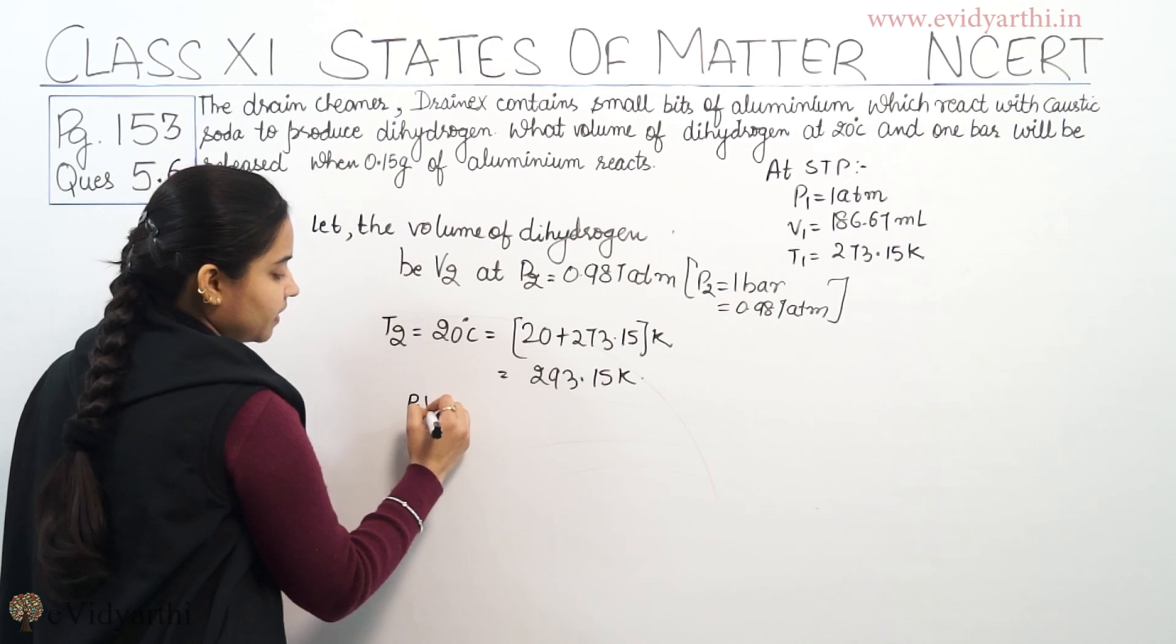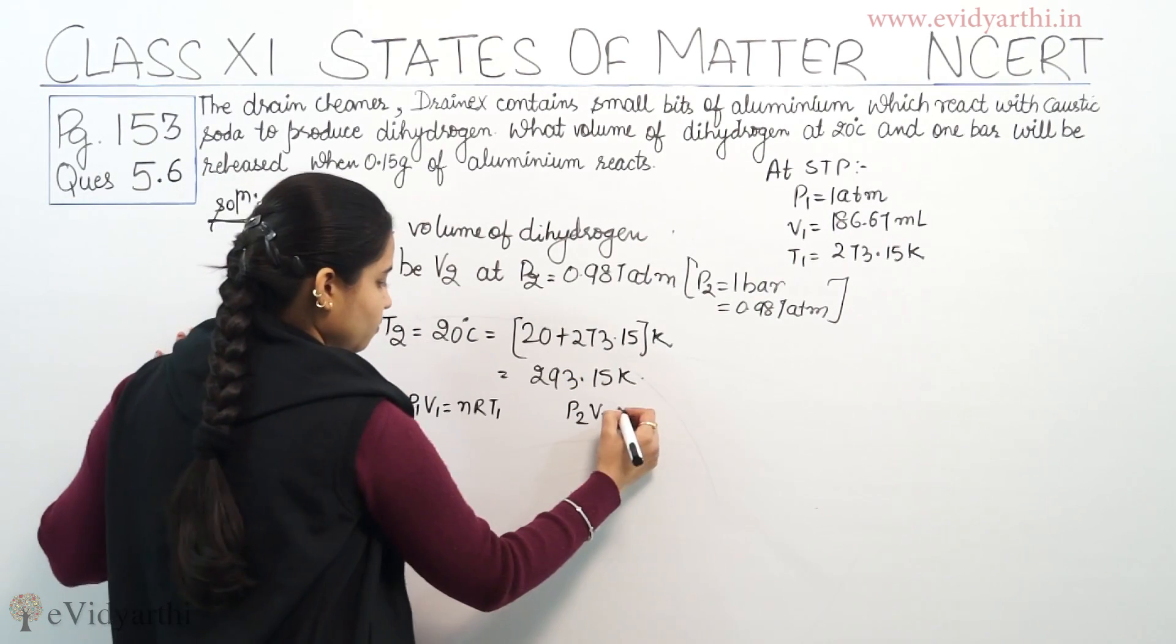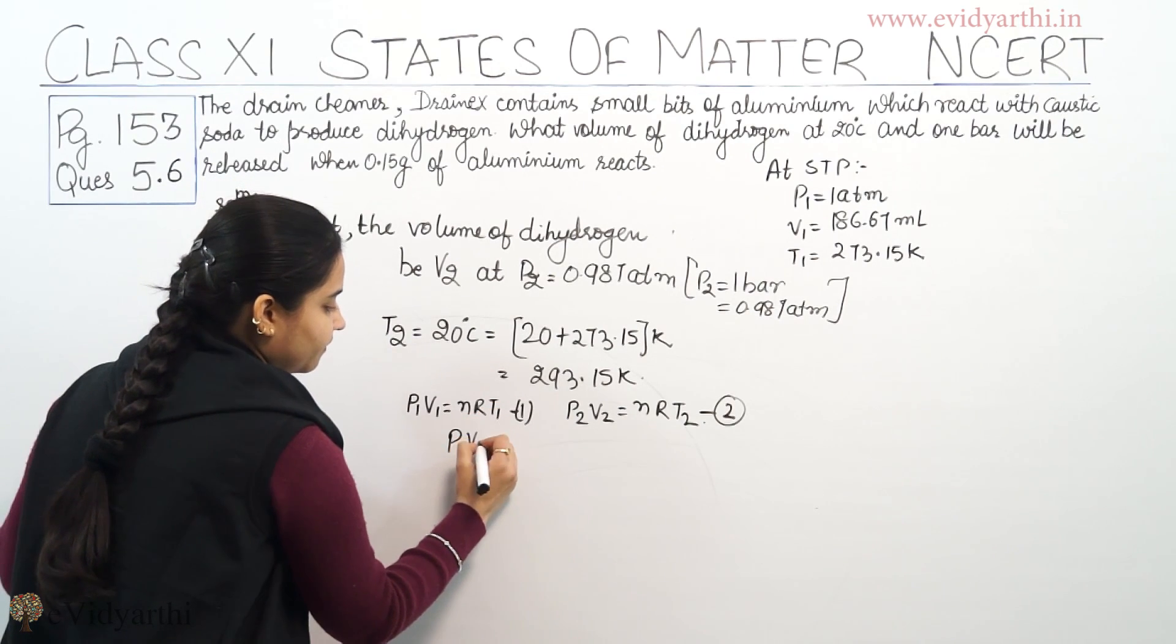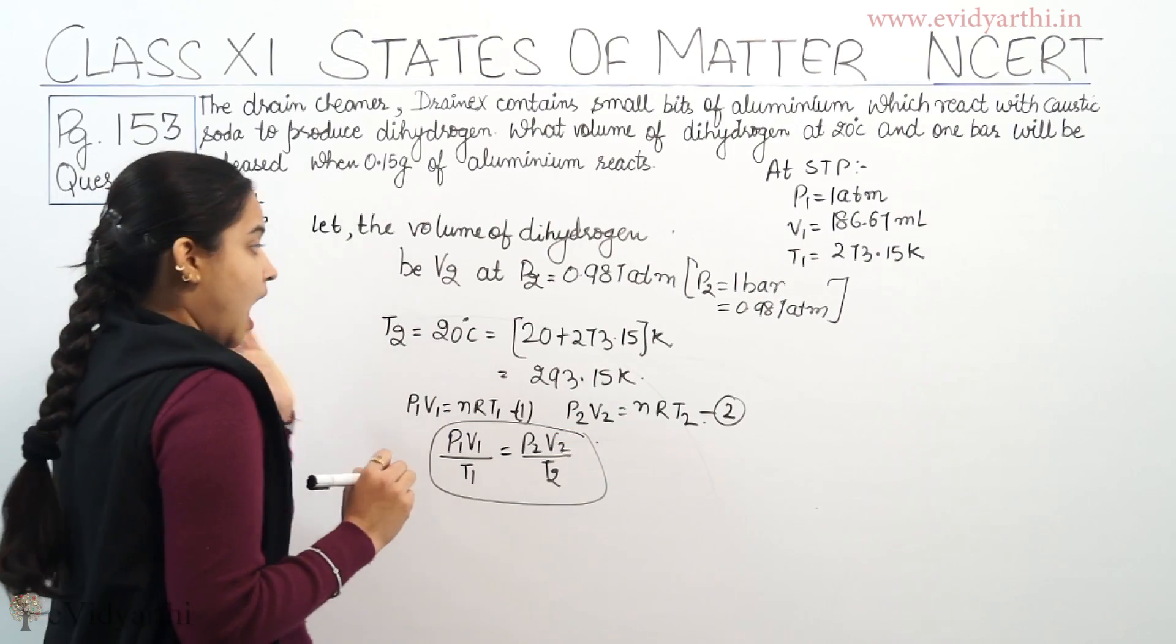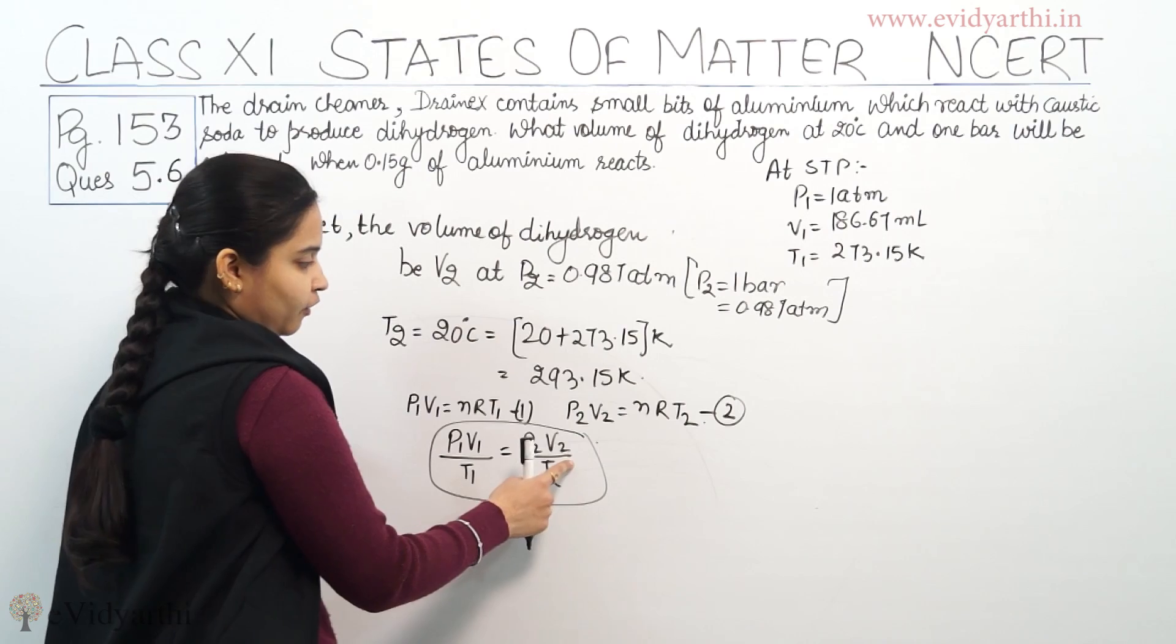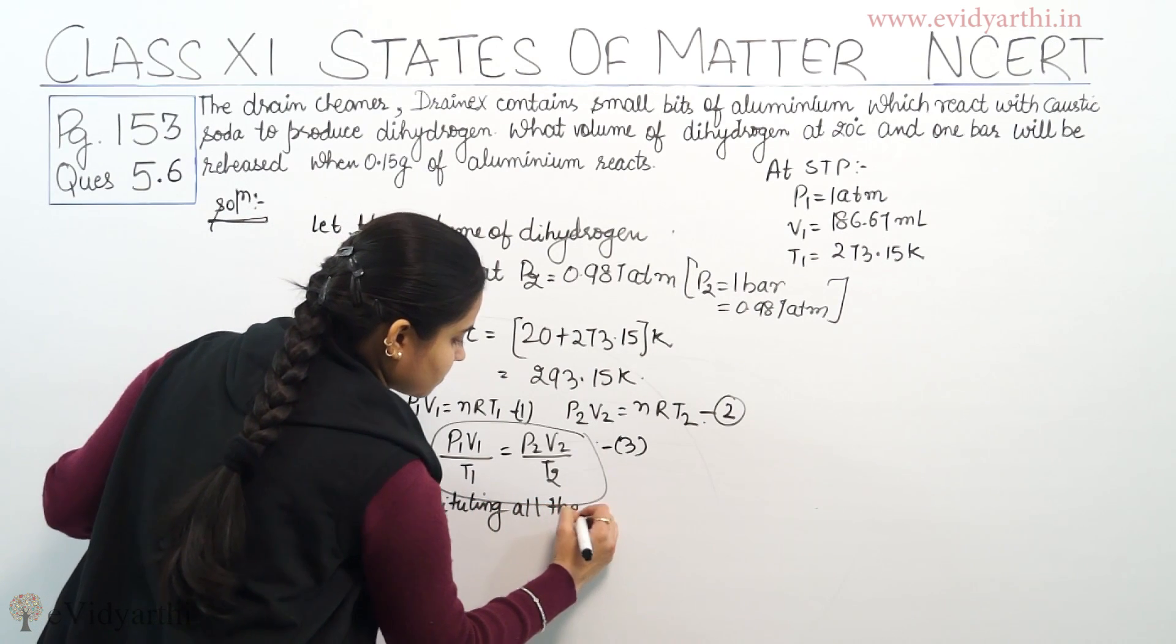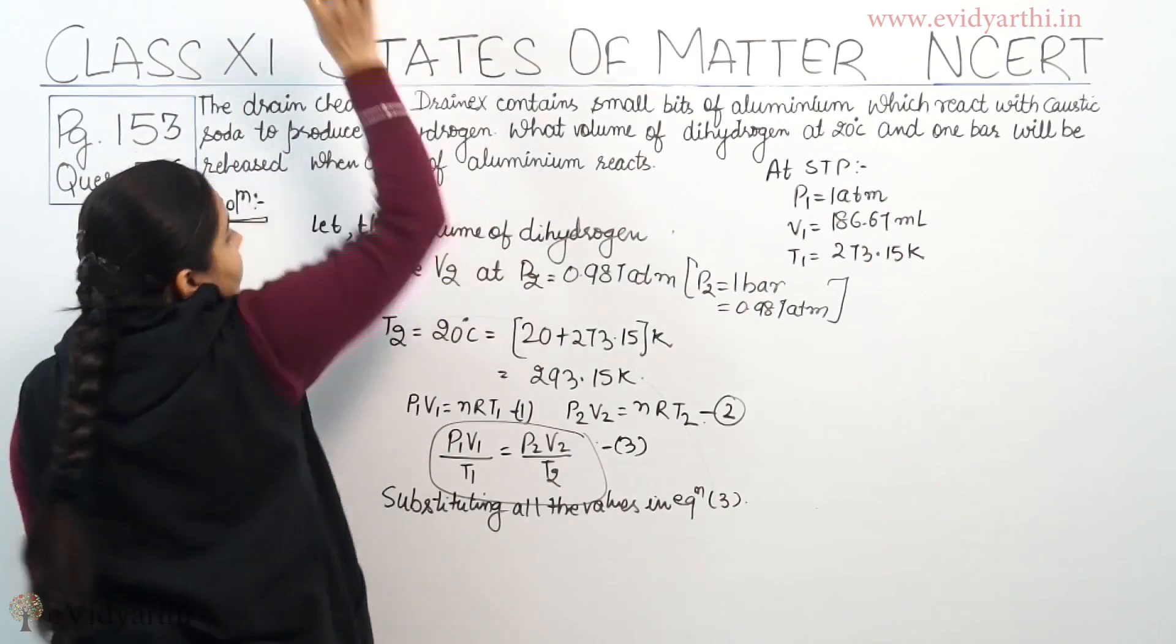From the ideal gas equation, P1V1 equals nRT1, and P2V2 equals nRT2. This is equation 2 and this is equation 1. If we compare them with nR value, we will get P1V1 upon T1 equals P2V2 upon T2. This is what we have got from the ideal gas equation. Now we need to find V2 value. We have P1, V1 and T1 value. We have P2 and T2 value. So substituting all the values in this equation, this is equation 3.